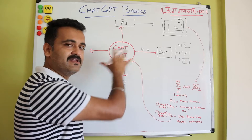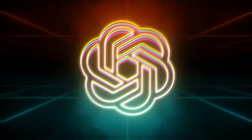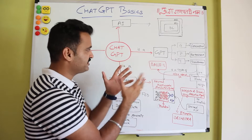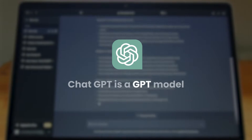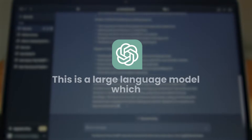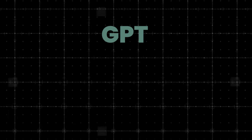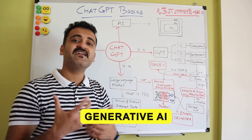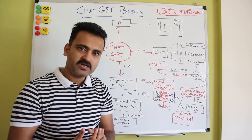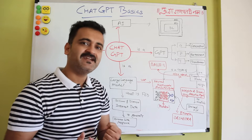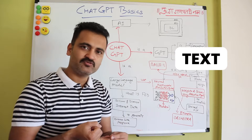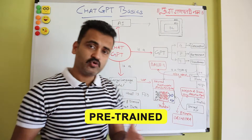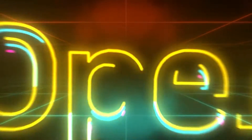Now let's decode ChatGPT step by step using the mind map. ChatGPT is based on a GPT model — a large language model. GPT stands for Generative Pre-trained Transformer. Generative means it's part of generative AI — a field where the model generates human-like responses. It could be text, it could be images — it generates something out of its own understanding. That is what generative means.